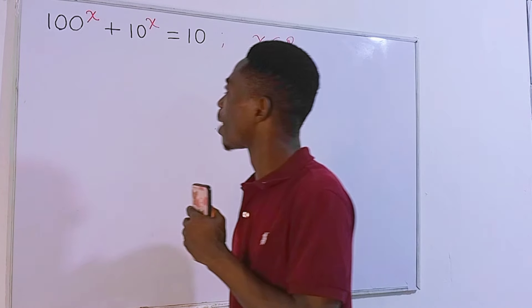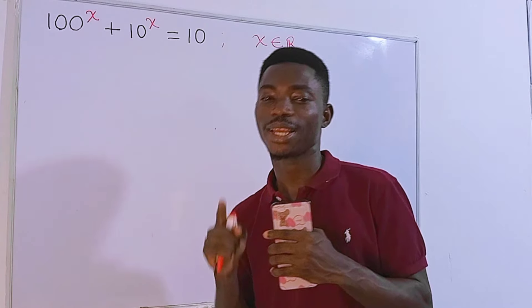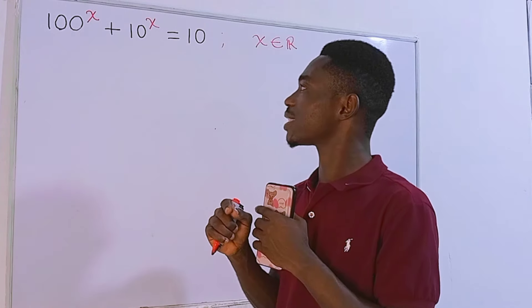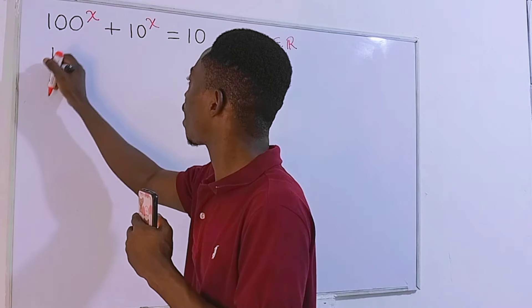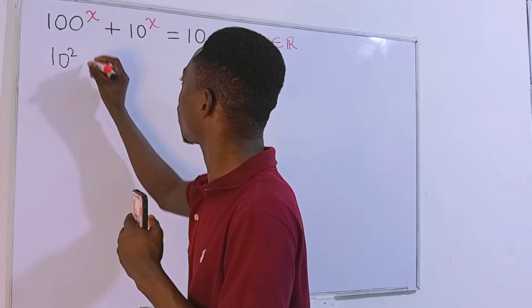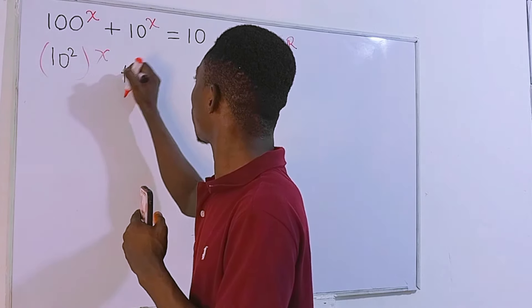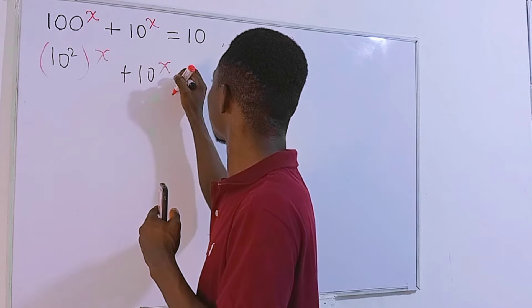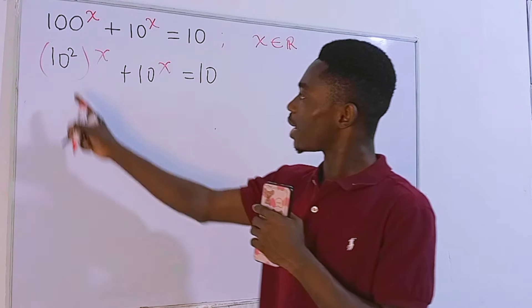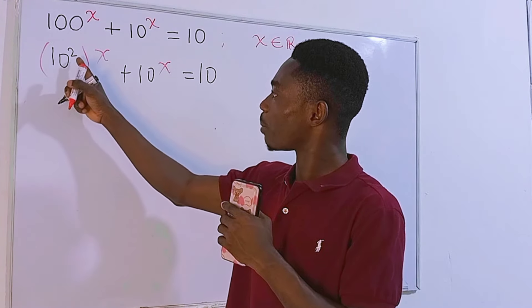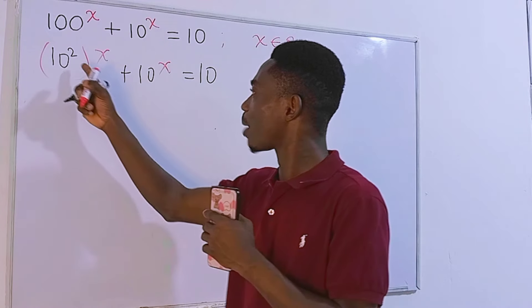The question looks a little bit challenging, but if you try to use the substitution method it is manageable. What I'll do first is rewrite this 100 as 10 to the second power, then all to the power x. Then we still have 10 to the power x, and this is still equal to 10.